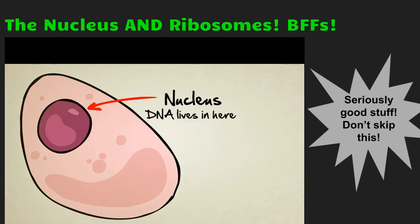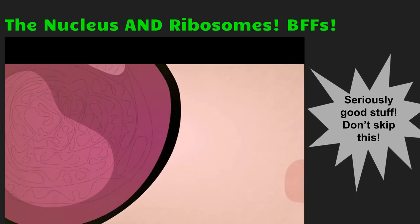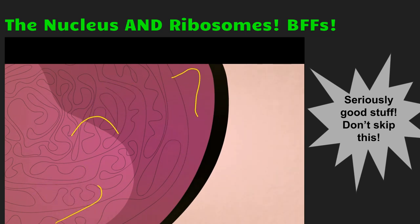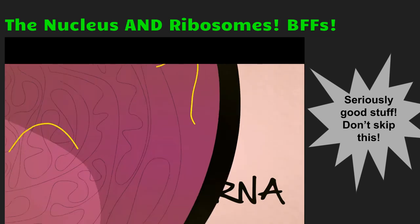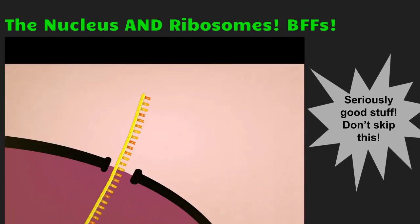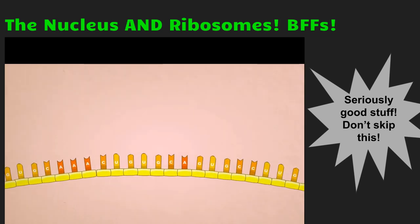Amino acids live outside the nucleus in what's called the cytoplasm. To help DNA interact with the cytoplasm and convert those amino acids into proteins, special chemicals inside the nucleus make partial copies of the DNA code. These partial copies, called RNA, look a lot like DNA, but they're shorter and they're missing one of their sides. Their small shape and size allows them to fit through tiny pores in the nucleus, out to the cytoplasm, and into the mouth of another particle called a ribosome.